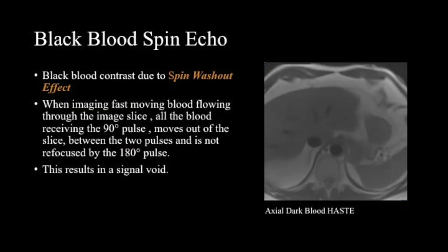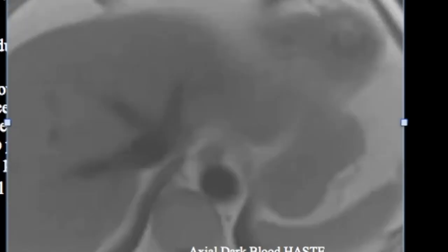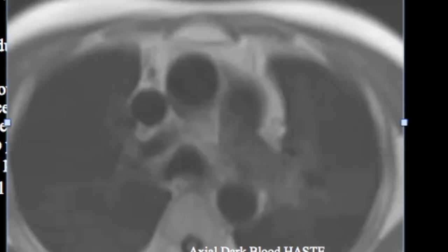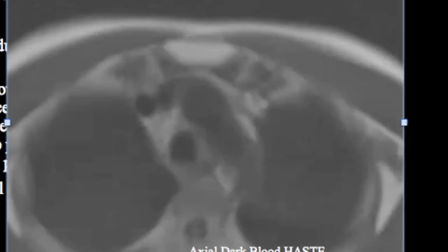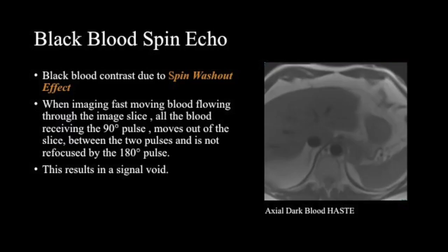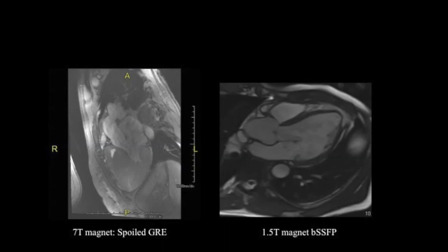A black blood spin echo is the first and foremost acquisition in a CMR examination. Moving blood appears black due to the spin washout effect. The blood in the image slice receives the 90-degree pulse, but when we apply the next 180-degree pulse, the blood moves out of the slice and fails to receive the refocusing pulse, which causes the signal void. The black blood sequence, or HASTE, is used to understand cardiac and mediastinal anatomy and to plan subsequent planes.